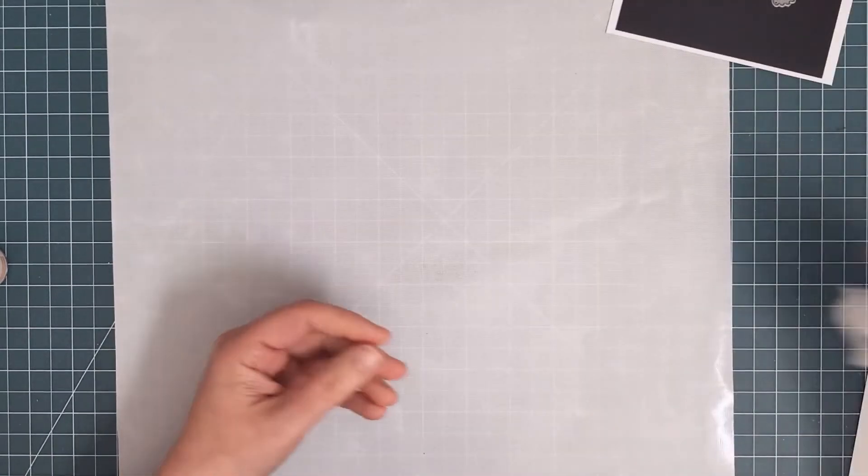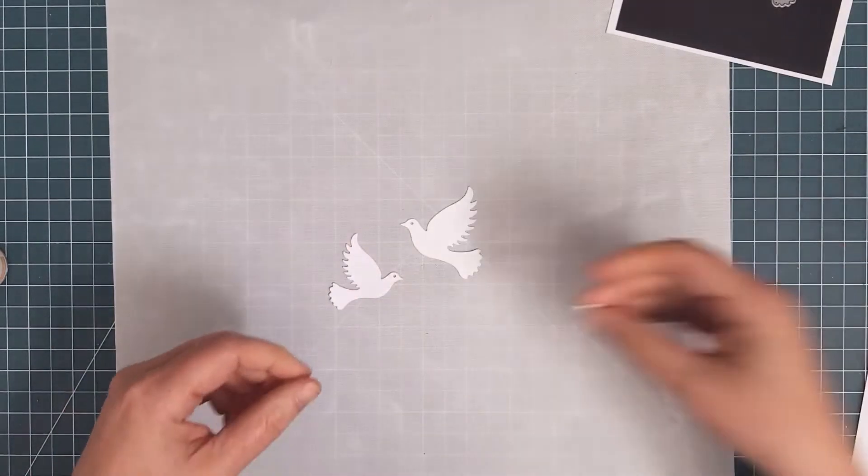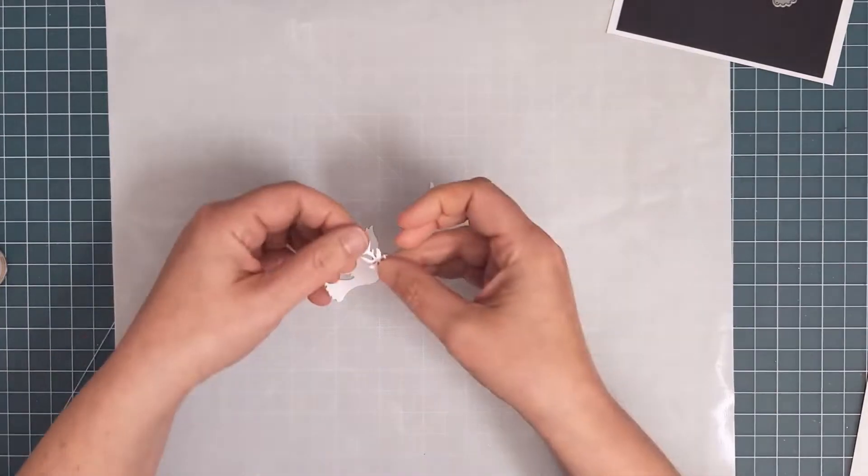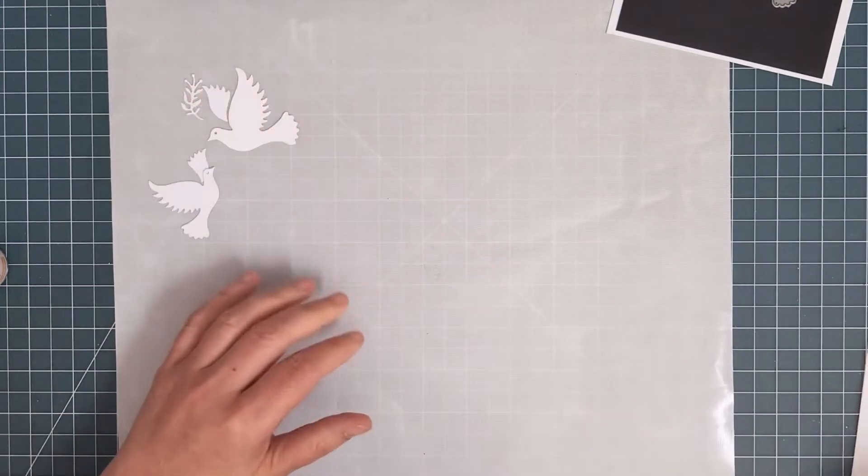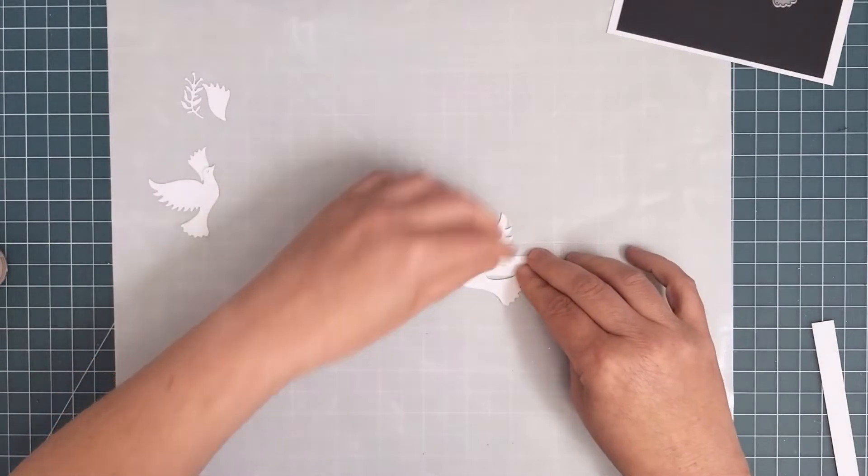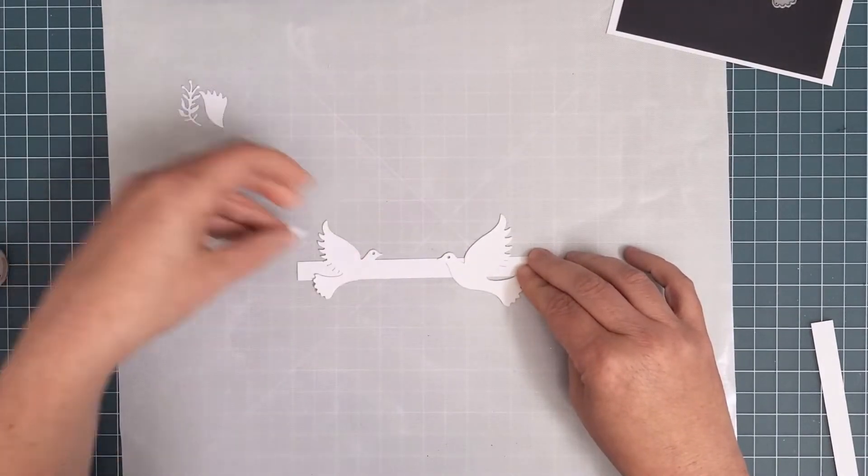Next I used some dies from Impression Obsession. I cut the birds and their wings out of white cardstock and I created a handle from a strip of cardstock. This makes this process a bit easier because you're not trying to hold on to all the little pieces. I put a strip of temporary adhesive on the cardstock and attached each piece.